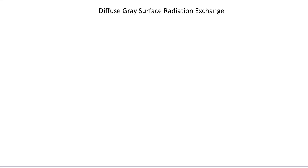The first thing we should mention is this property of materials. For a given wavelength and a given direction, we can say that reflectivity ρ at a given wavelength and direction, plus absorptivity α at that same wavelength and direction, plus transmissivity τ equals one. This is basically an energy balance — a photon comes in and hits the surface. It can either be reflected ρ, absorbed α, or pass through the surface τ. Those are the three possibilities.